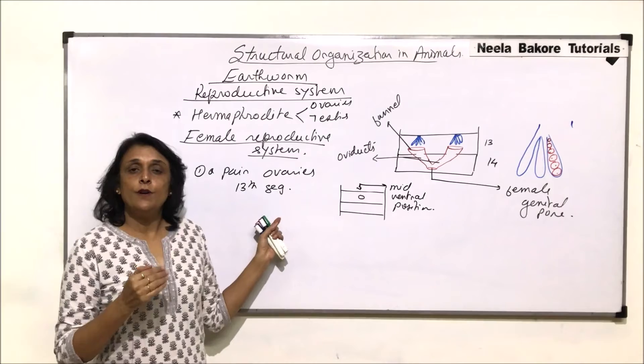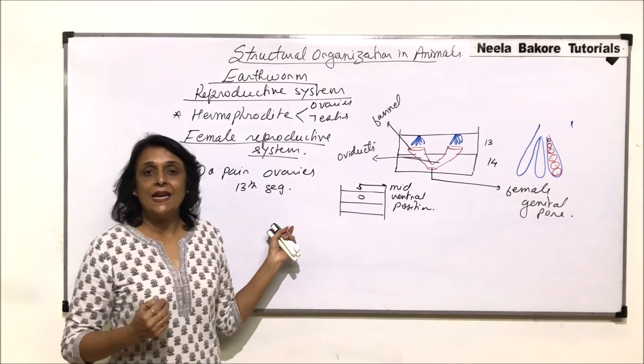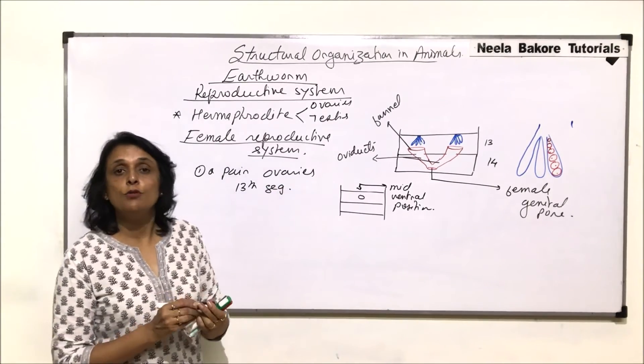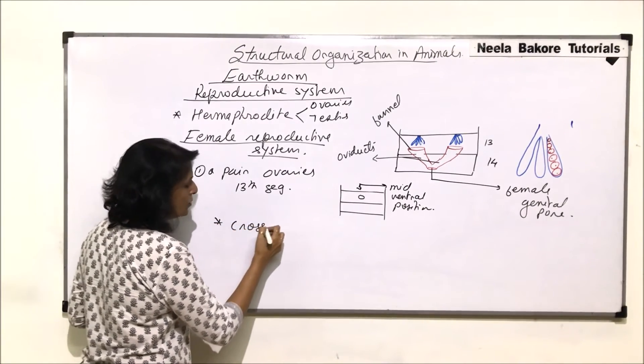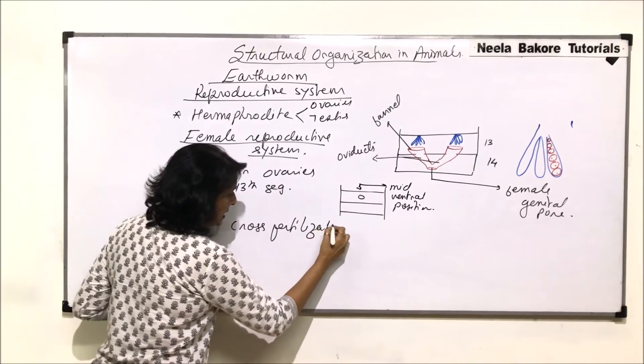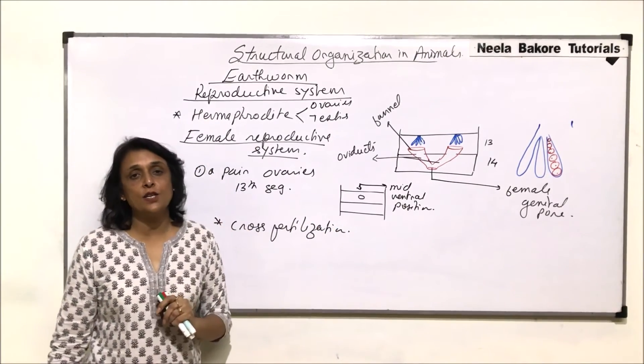One worm has both sex organs. Sperms and eggs are produced by the same worm, but earthworms normally show cross-fertilization. Now how is this cross-fertilization possible?